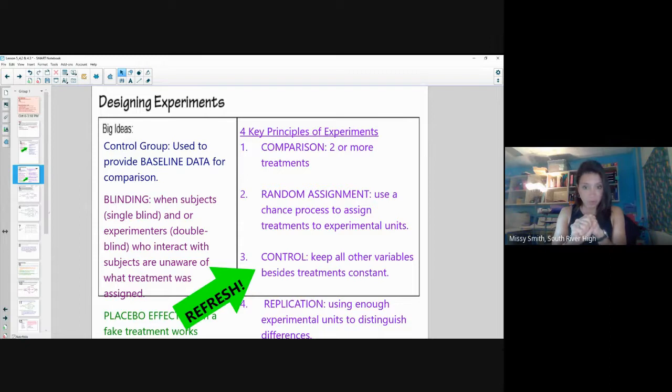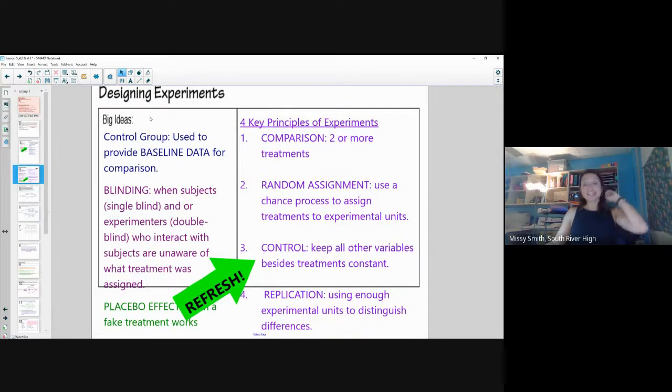You have to have control of some sort. Maybe you have a control group, maybe you block. And then you may have to have replication. You need to make sure you have enough experimental units in each of your treatment groups.